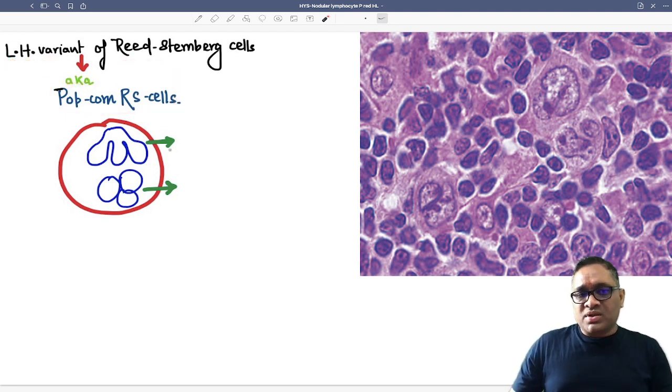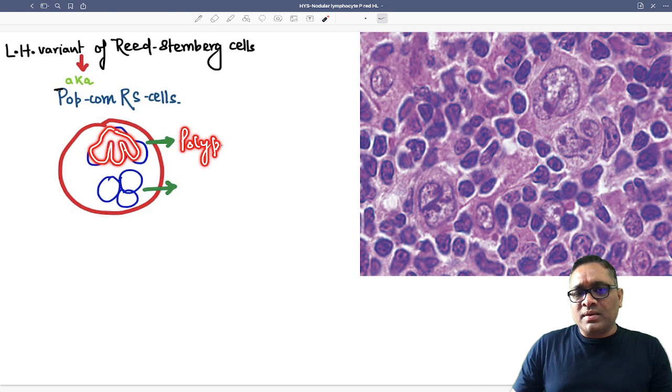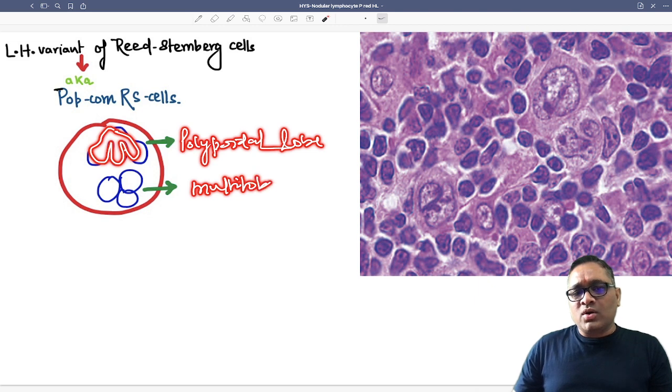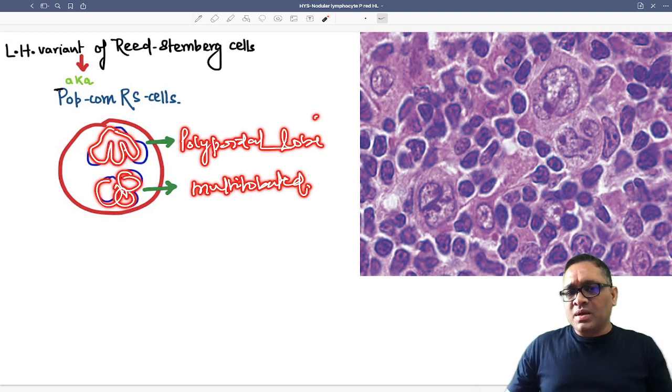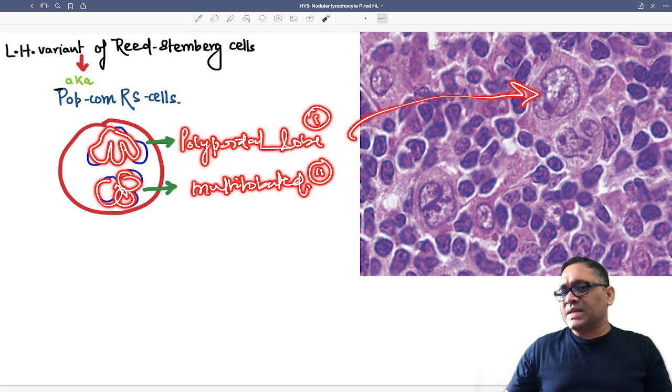Because of the two important features. You can see the nuclei will be like a polypoidal lobe or multi-lobated nuclei. So when you have this kind of presentation, polypoidal or multi-lobated nuclei, that means it can be a popcorn Reed-Sternberg cell, as you can see in this diagram also.